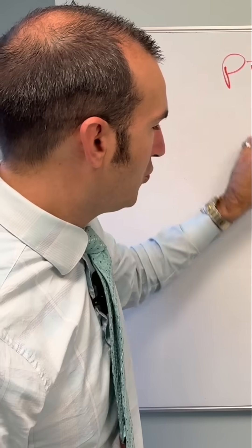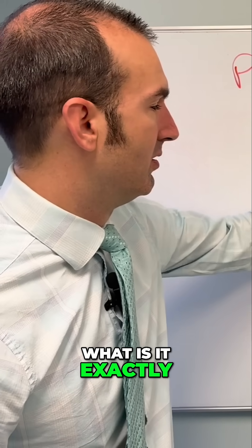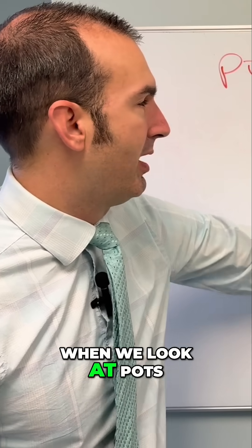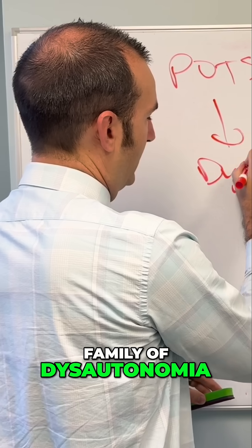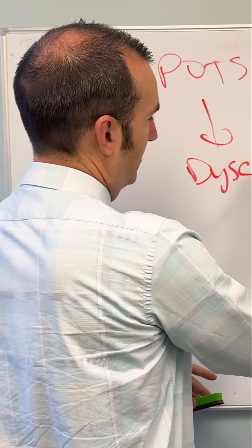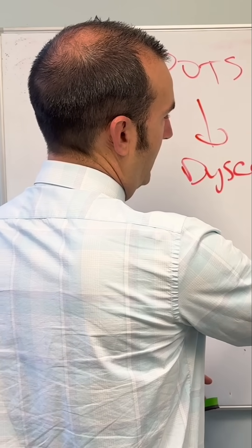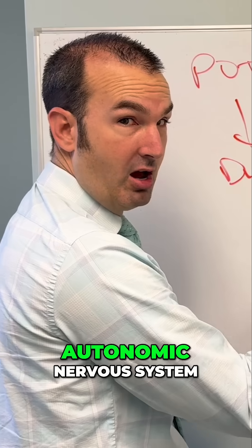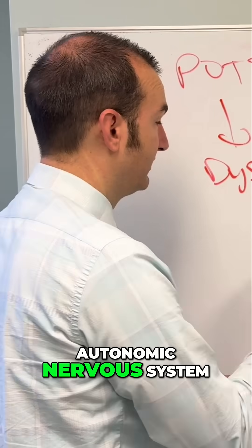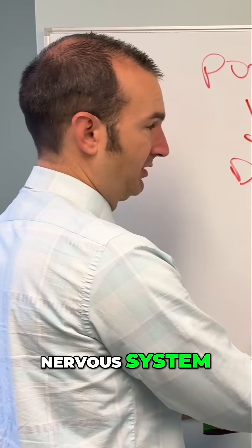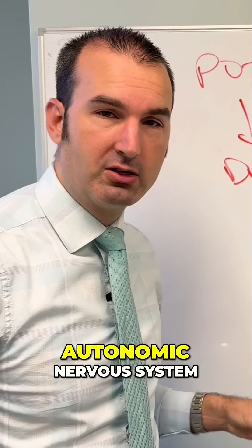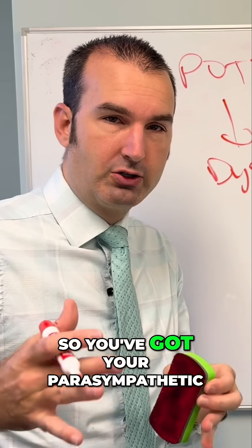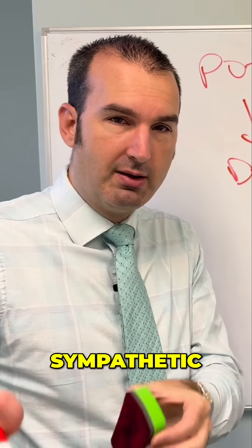So what is it exactly? When we look at POTS, it falls underneath the family of dysautonomia — dysfunction of the autonomic nervous system. So we're going to put NS for nervous system. You've got your parasympathetic and sympathetic.